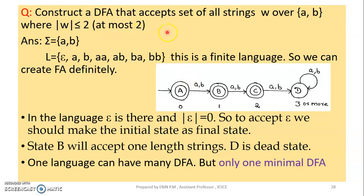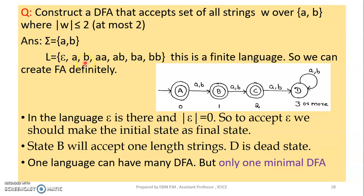Next, we have to construct a DFA that accepts strings over {a, b} where the length of the string is less than or equal to 2. We need to accept the condition on the length of the string. This is the maximum length of the string, which means strings of length 0, 1, or 2.